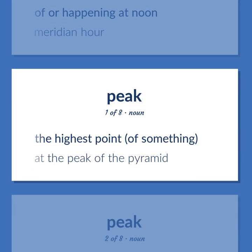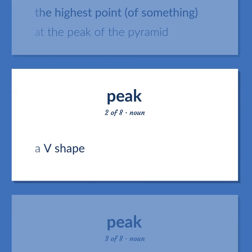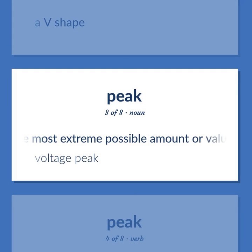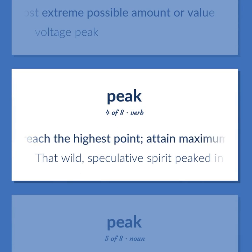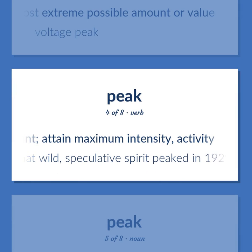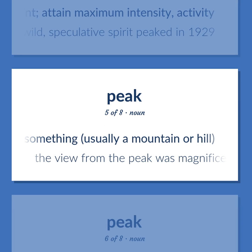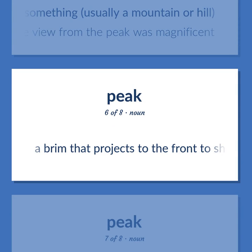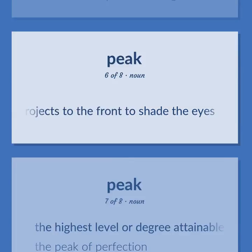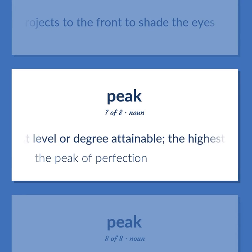Peak. The highest point of something. Example: At the peak of the pyramid. A V shape. The most extreme possible amount or value. Example: Voltage peak. To reach the highest point; attain maximum intensity or activity. Example: That wild, speculative spirit peaked in 1929. The top or extreme point of something, usually a mountain or hill. Example: The view from the peak was magnificent. A brim that projects to the front to shade the eyes. The highest level or degree attainable; the highest stage of development. Example: The peak of perfection.